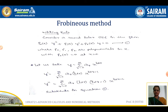Here P0, P1, and P2 are all polynomials in x, where P0(x) = 0 at x = 0.